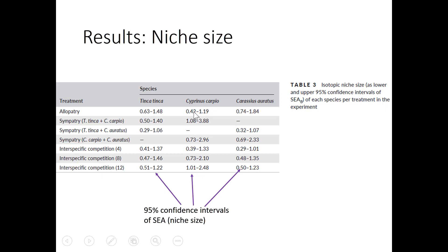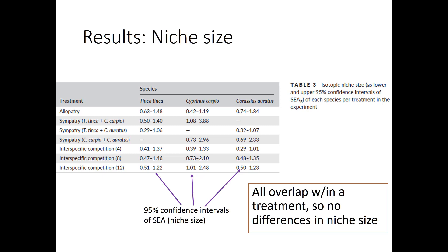Comparing competition with one species, another species, or when competition is really strong — the 95% confidence intervals overlap enough that statistically there's no difference. So the area of the niche is about the same across the entire column. Same thing goes for carp: no differences when it's by itself versus all other conditions. No difference for goldfish either, when it's by itself versus all other conditions.